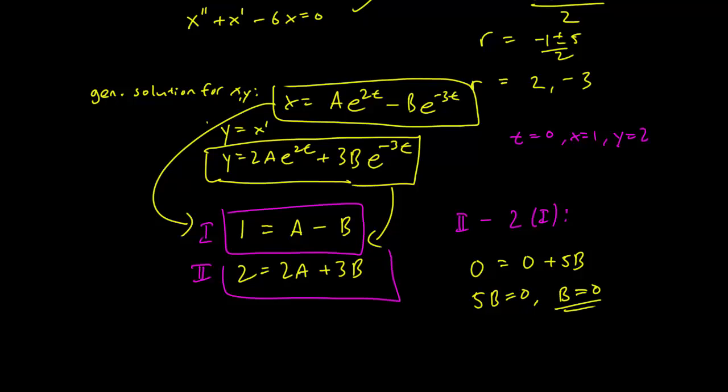And this just means that our specific solution for our system is going to be x of t equals A... Oops, sorry, we forgot about that. We have to find A first. So B is 0, so A must be 1. Sorry about that. So x of t is just going to be 1 times e to the 2t, and y of t is just going to be 2 times e to the 2t. So that's our specific solution, and we are done.